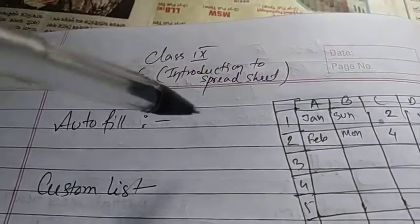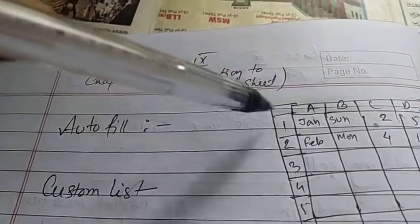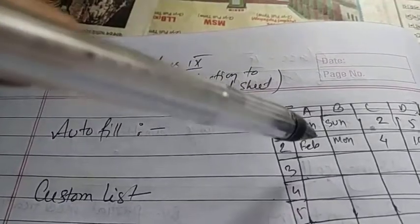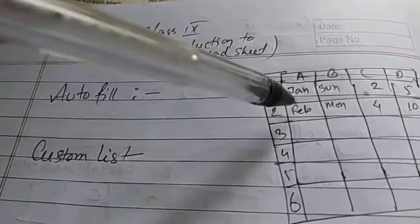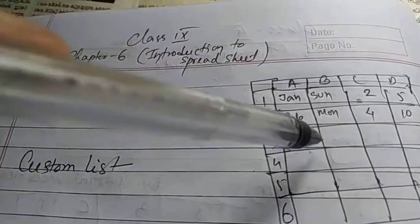Another feature of MS Excel is autofill. Autofill means automatically filling cells with predefined data. For example, if you have to type the months of a year - January, February, March, April...